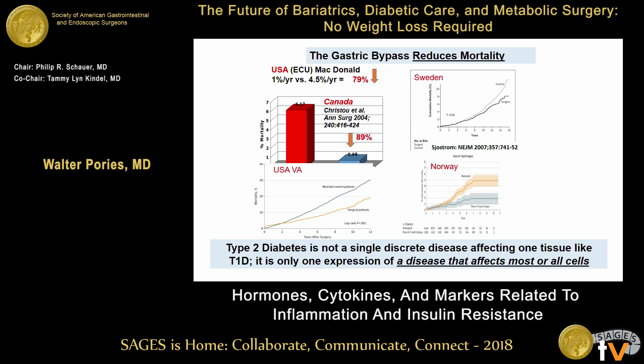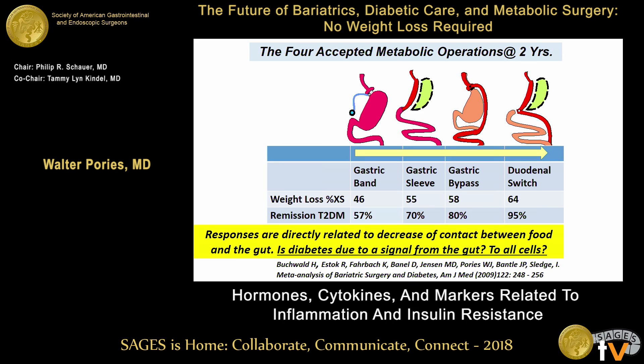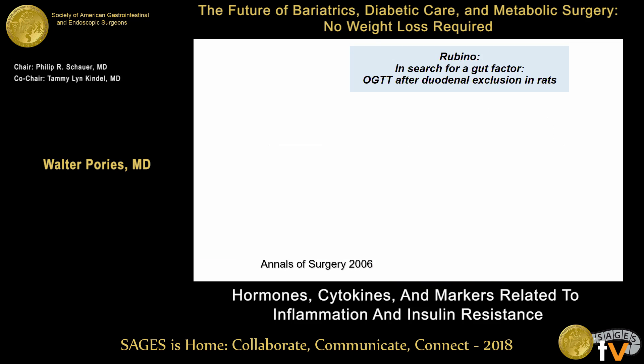If it's this broad an effect, what surgery does must affect all of the cells — or most of the cells — in the body. If you look at the four operations, as they exclude more gut, they also become more effective. And so it's really as if: is diabetes due to a signal from the gut, and is that signal to all the cells?